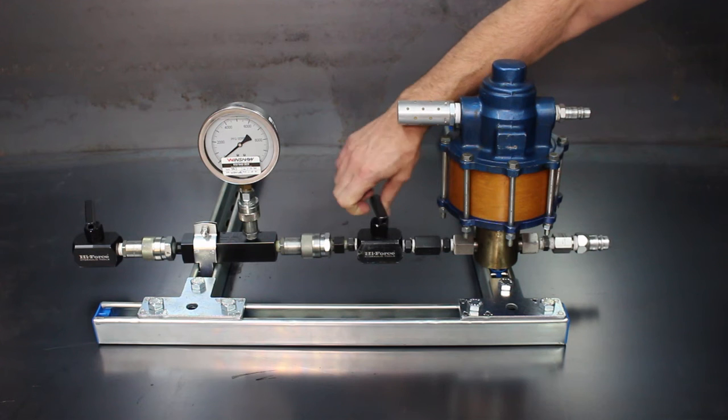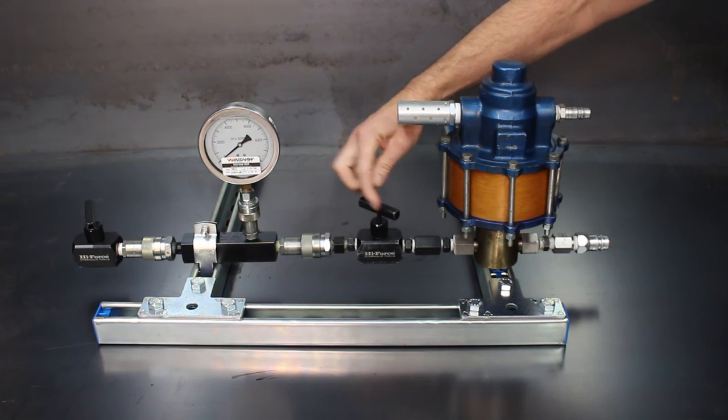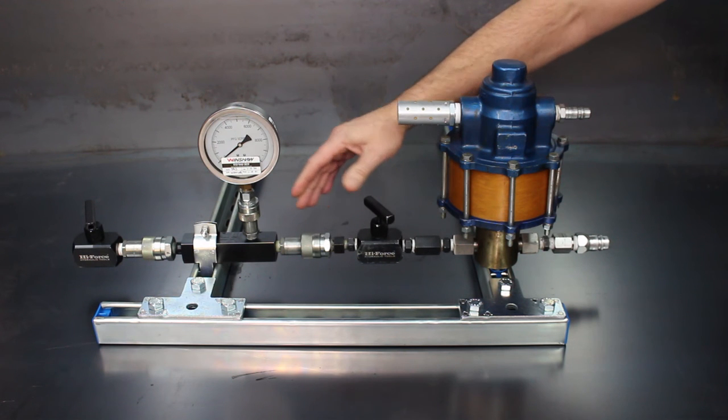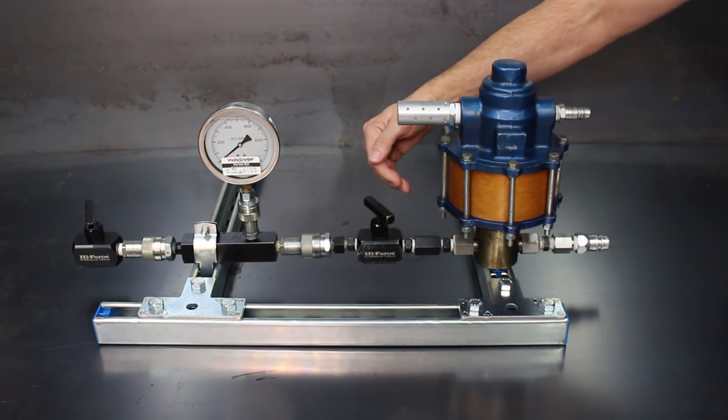By opening the needle valve you can allow the fluid from the pump into this section for testing. Then when you close the needle valve you can maintain the pressure in this section and isolate it from the pump.